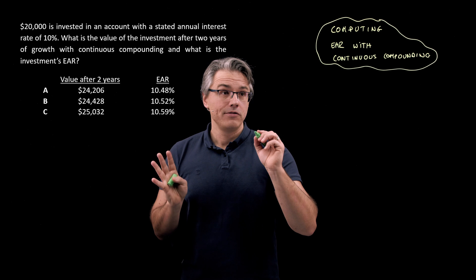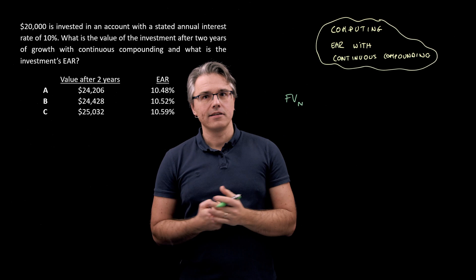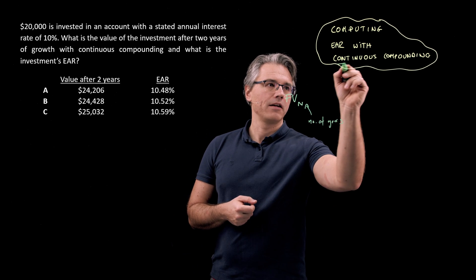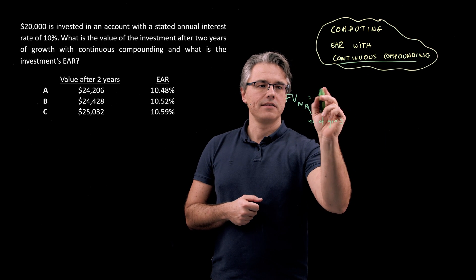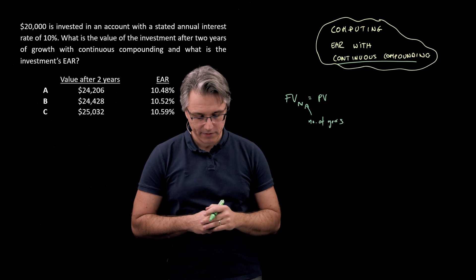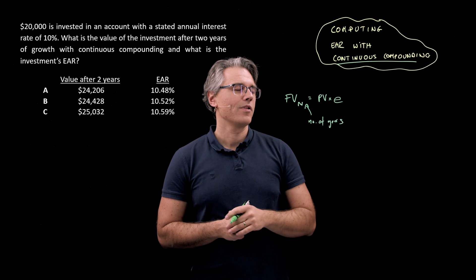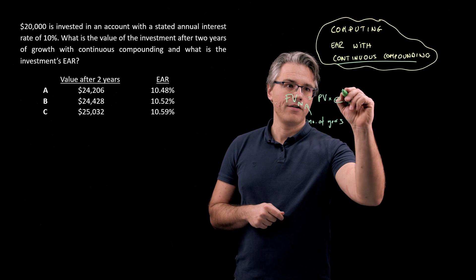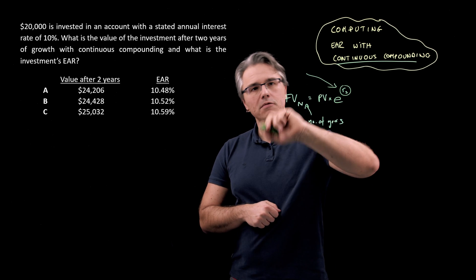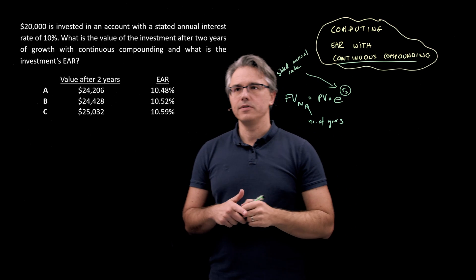So let me show you the official formula. First of all, the value after a certain number of periods. So FV_N where N is going to be the number of years. With continuous compounding being assumed, that's going to equal whatever the present value, so the investment is in this case twenty thousand, now times the number E raised to the power of R_S. I'm going to make sure that we understand that this is the stated annual rate. Previously I just called this R.